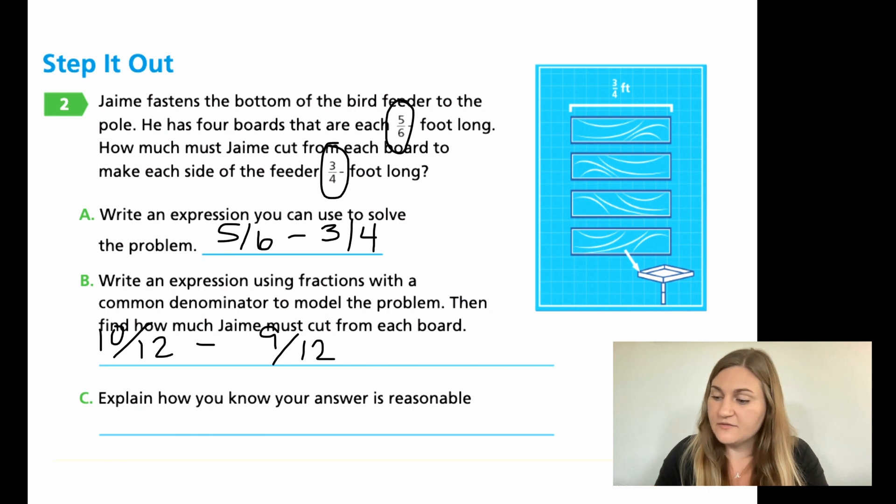Then I need to find out the answer. So 10-twelfths minus 9-twelfths, both have common denominators. I can just subtract straight across. So 10 minus 9 is 1. So 1-twelfth. And this unit is with feet.